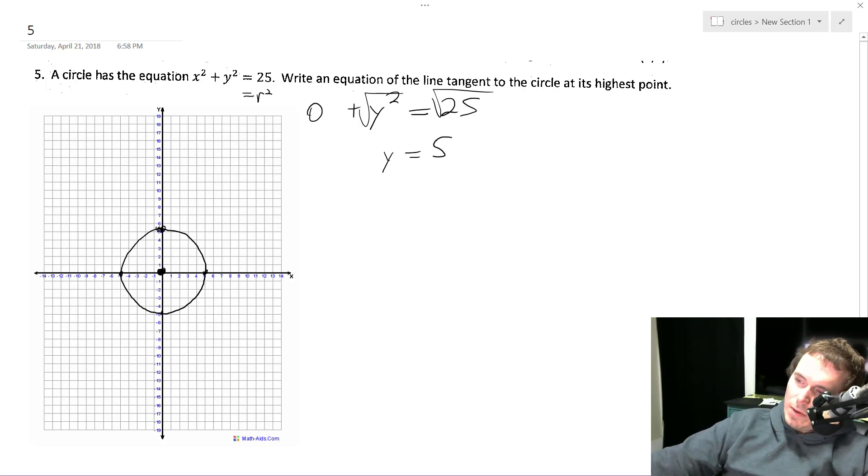Well, plus or minus 5 because if x is 0, it can be at the bottom portion or the top. So they want at the highest point of the circle, so the highest point in this case is going to be 0, 5.